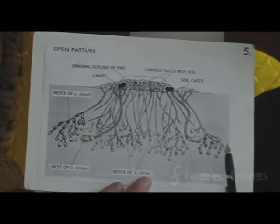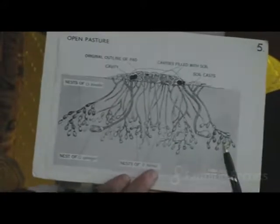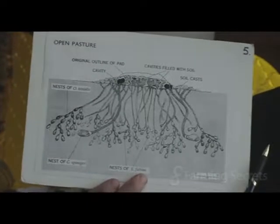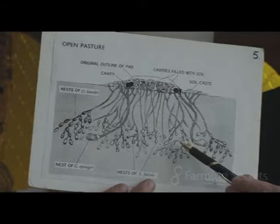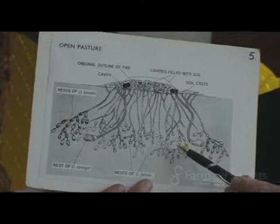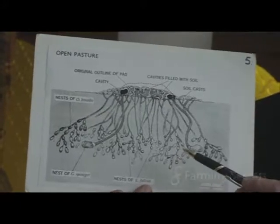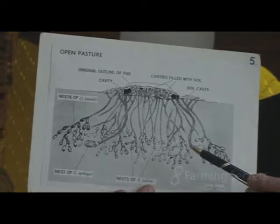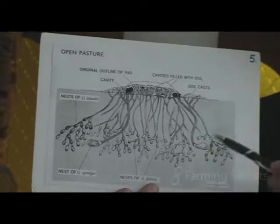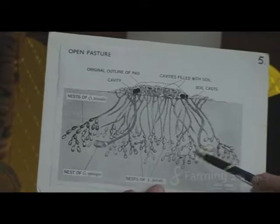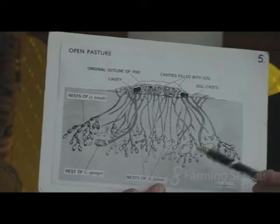The diameter of this tunnel system is roughly the diameter of a bicycle wheel, and these tunnels radiate outwards from a cow pad. You have a very evenly distributed tunnel system underneath each cow pad — in fact, the direction of the tunnels is very similar to the direction of the spokes in a bicycle wheel.